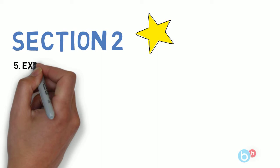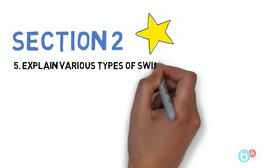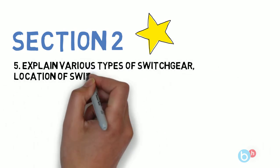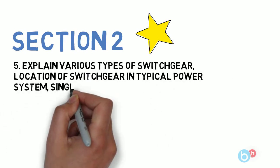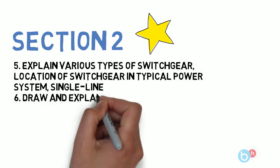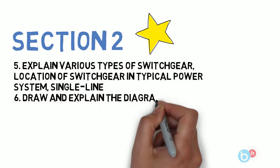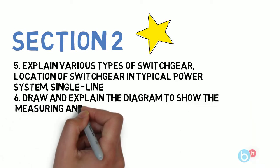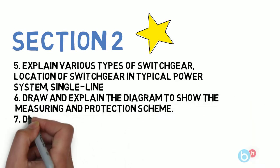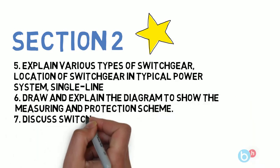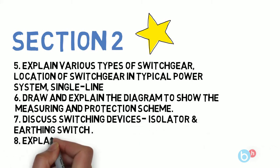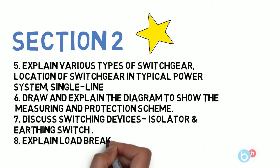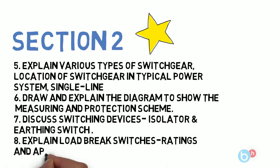Section two also has four questions: first, explain different types of switchgear, their location in a typical power system, and single line diagram; next, draw and explain the diagram showing the measuring and protection scheme; then, discuss switching devices — isolators, earthing switches; and finally, explain load break switches, their ratings and applications.